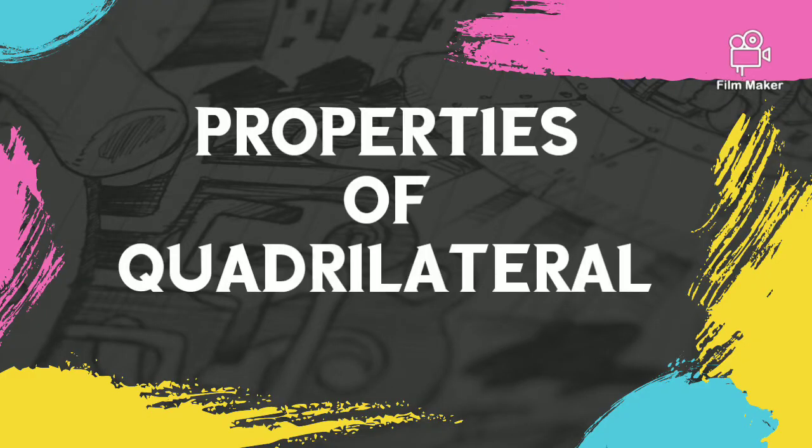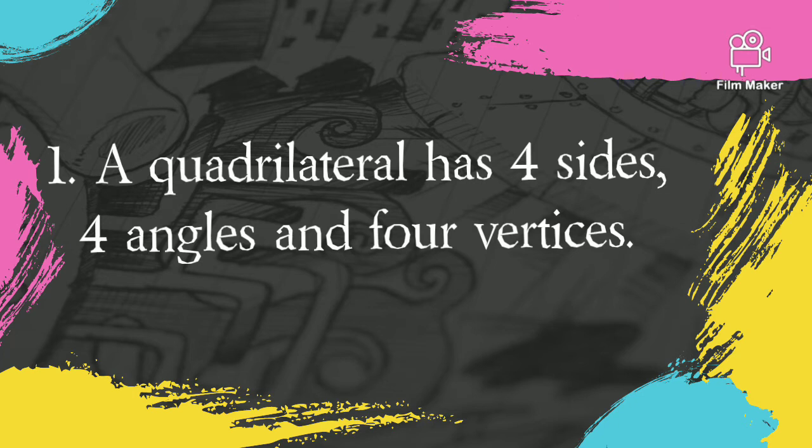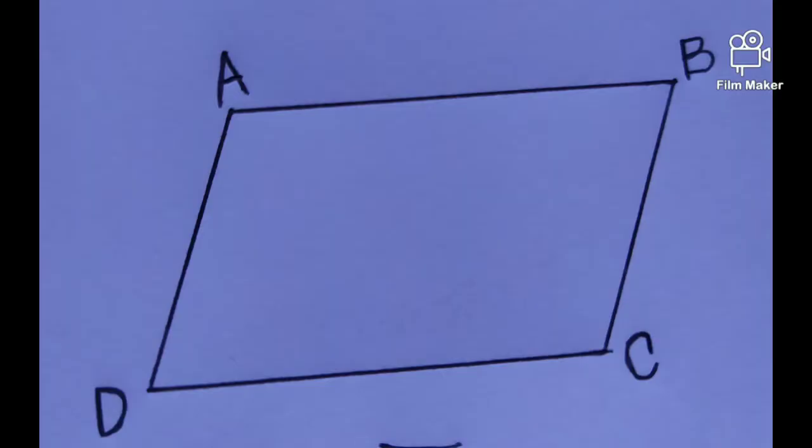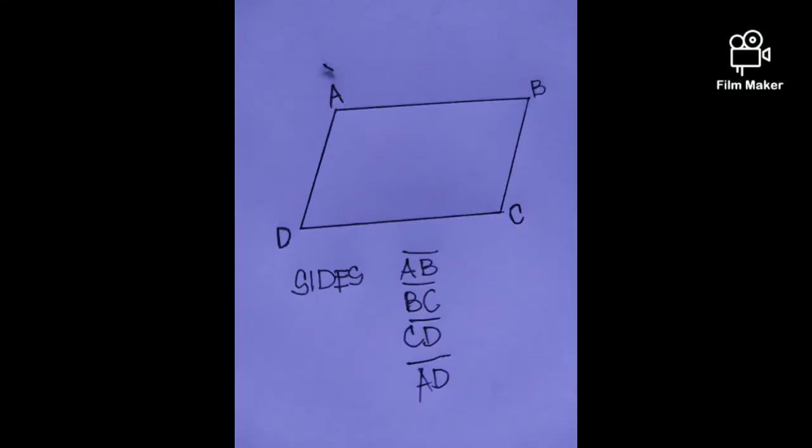Properties of quadrilateral. Number one, a quadrilateral has four sides, four angles, and four vertices. For example, in this quadrilateral, we have four sides which are side AB, side BC, side CD, and side AD.